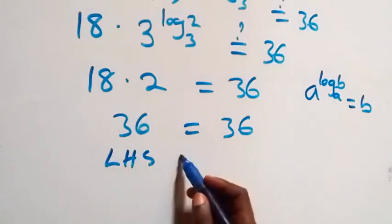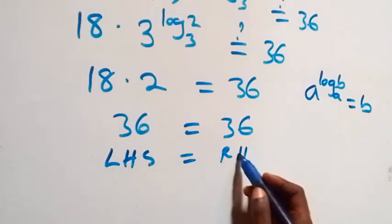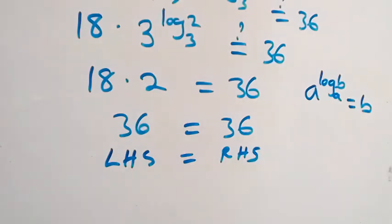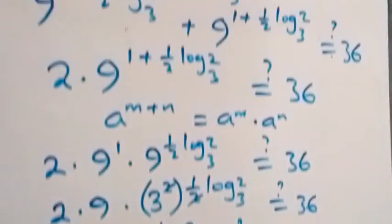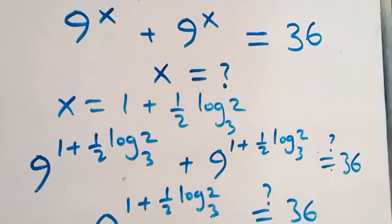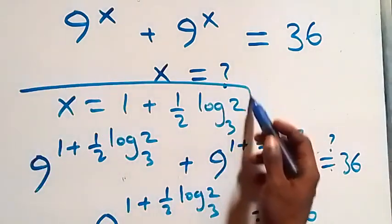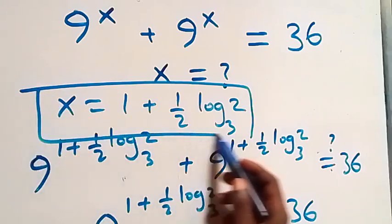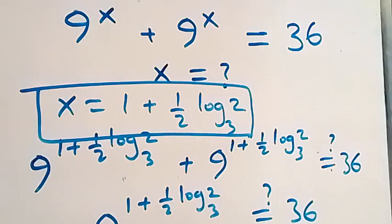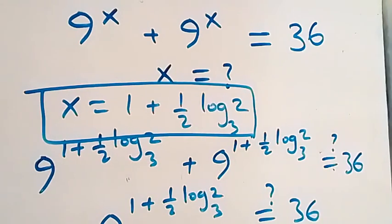The left-hand side equals the right-hand side. Hence we conclude that x equals 1 plus ½·log₃2 satisfies this given problem. Thank you for watching — don't forget to subscribe for more videos, turn on the notification bell, share this video, give it a thumbs up, and put your comment in the comment section. Also join our membership package for access to more exclusive content. Thank you — see you next class, bye for now.